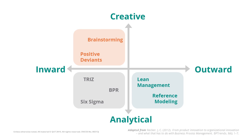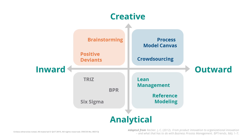The last quadrant is where you would combine creativity with an outward-looking view. Crowdsourcing would be a good example — if you ask people outside your organization to think about what they would like to get from your organization, it gives you an outsider's perspective on the processes you want to execute. There is also the process model canvas, which is an example of a stream we would refer to as design thinking. This is an approach I am going to deal with in more detail in one of the next sessions.